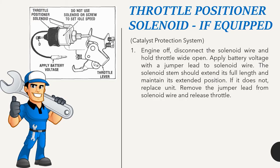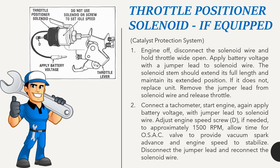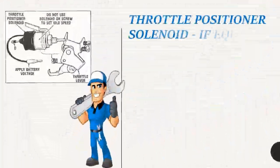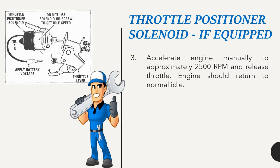Remove the jumper lead from solenoid wire and release throttle. Connect a tachometer, start engine, and again apply battery voltage with jumper lead to solenoid wire. Adjust engine speed screw D, if needed, to approximately 1500 RPM. Allow time for OSAC valve to provide vacuum spark advance and engine speed to stabilize. Disconnect the jumper lead and reconnect the solenoid wire. Accelerate engine manually to approximately 2500 RPM and release throttle; engine should return to normal idle.